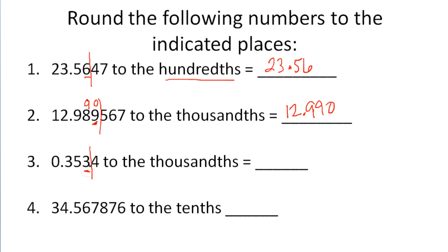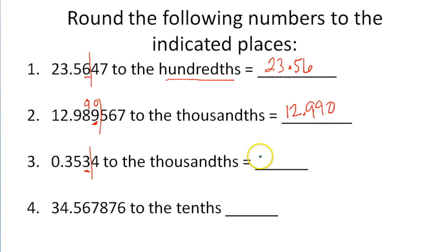We want to round to the thousandths place, so we look to the ten-thousandths place. And if it is a 4 or lower, we're going to go ahead and leave this alone. So if I want to round this to the thousandths place, I will end up with 0.353.